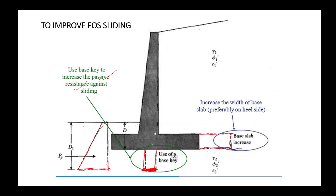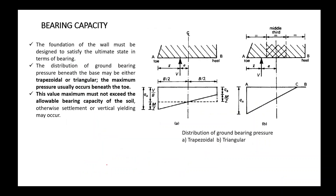For bearing capacity, we must ensure the foundations of the wall are designed to satisfy the ultimate limit state in terms of bearing. The maximum pressure usually occurs beneath the toe of the wall, and this maximum value must not exceed the allowable bearing capacity.